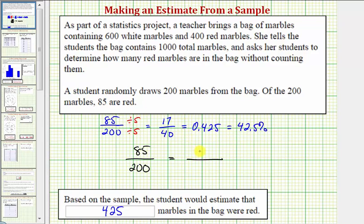So the second ratio would be r, the unknown red marbles, to the total of 1,000 marbles. So this is our proportion. Now to solve the proportion, we would cross multiply and solve for r. To cross multiply, we'd have 200 times r must equal 85 times 1,000.